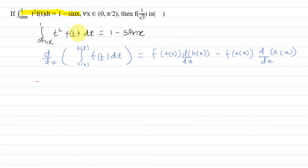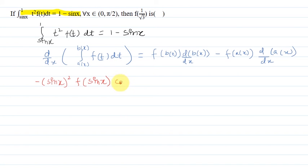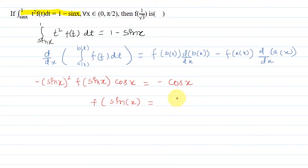We need to calculate the value of f(sin x). Differentiating the right side, 1 becomes 0 and minus sin x becomes minus cos x. On both sides cos x appears, so cos x cancels out, and f(sin x) becomes 1 by sin x.